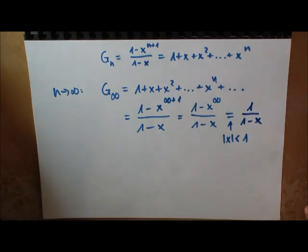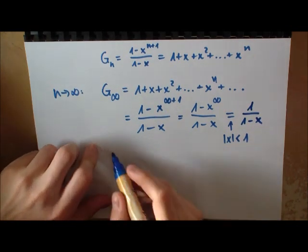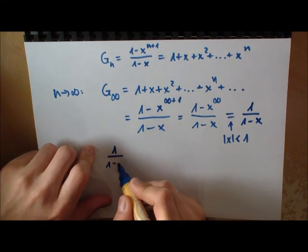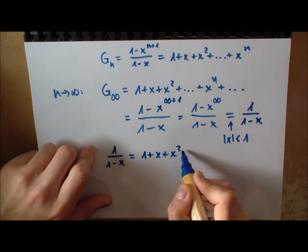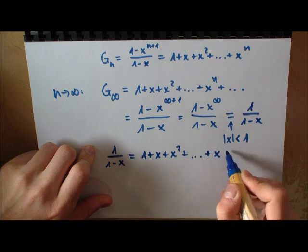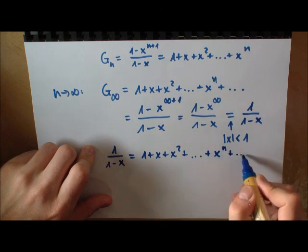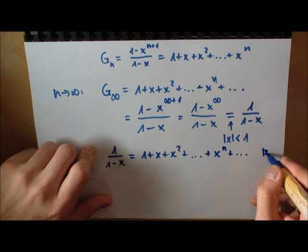And you will get smaller and smaller numbers and actually you will end up having zero. This is a very interesting thing. What we have written down here is 1 over 1 minus X is equal to 1 plus X plus X squared plus all this stuff going to infinity.